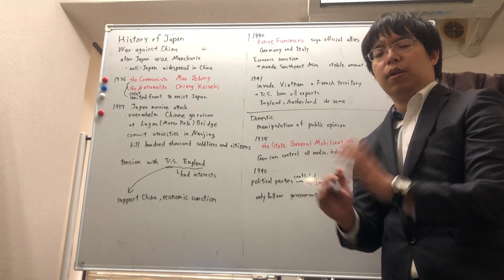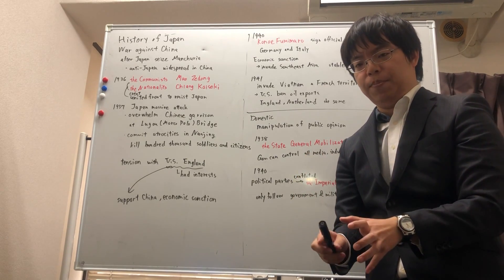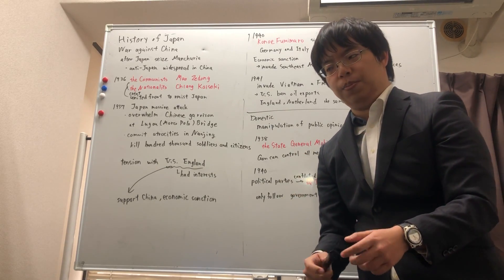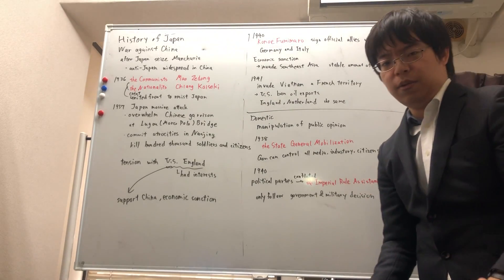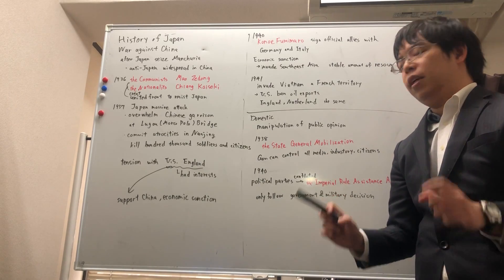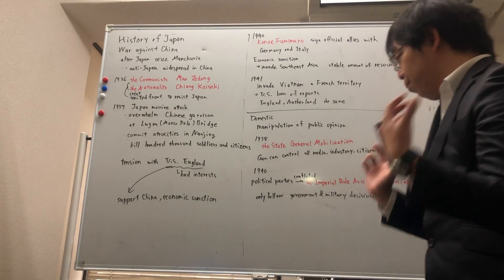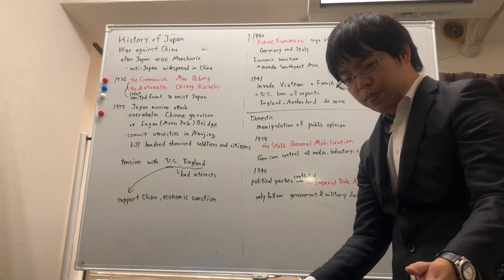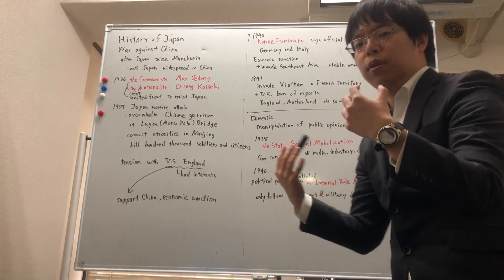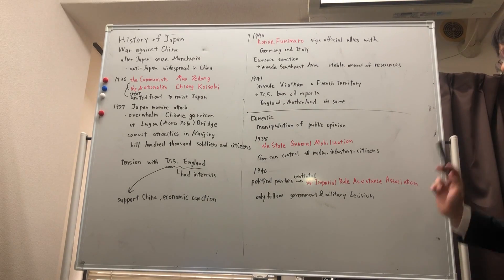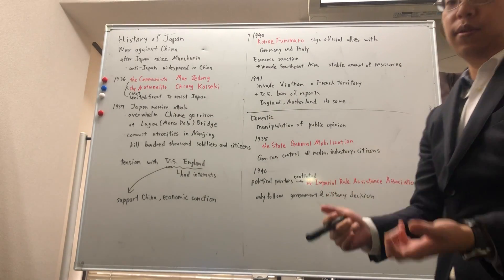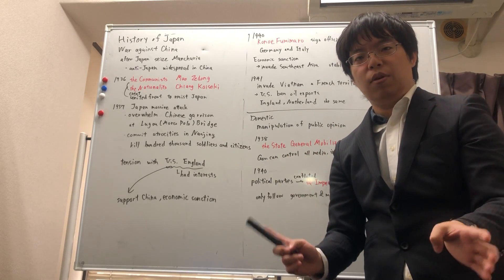Looking at domestic issues inside Japan: in 1938, the National General Mobilization Law was enacted. By 1940, the government could control all media, industries, and citizens. Also in 1940, all political parties were merged into a single party, the Imperial Rule Assistance Association, so that the Diet simply followed the government and military's orders.